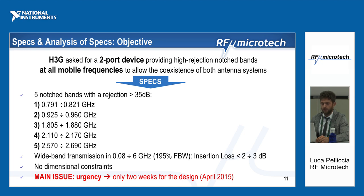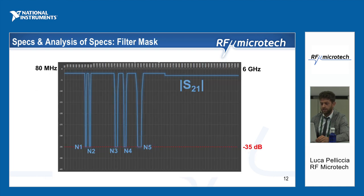We had no dimensional constraints, but the big challenge was urgency — they gave us just two weeks to design and another two weeks to fabricate and provide the device. This happened in April 2015. This is the mask of the device: you can see the S21 parameter — the transmission from 80 MHz up to 6 GHz.